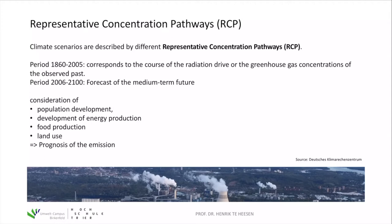These pathways are called Representative Concentration Pathways, or RCPs. They represent a trajectory of greenhouse gas concentration in the atmosphere — not the emissions, just the concentration. There are two periods: one covering the historical period from 1860 to 2005, where the pathways reproduce observed greenhouse gas concentrations, and then a forecast to the medium-term future until the end of the century. The four pathways consider different outlooks for population development and energy production.